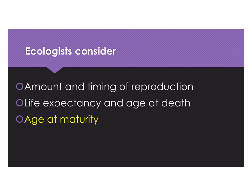So again, these are the things to consider in life history: the amount and timing of reproduction, life expectancy and age at death, and age at maturity.